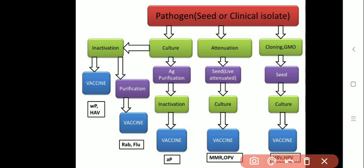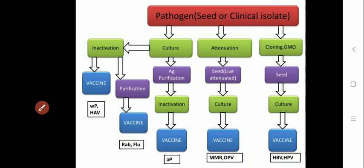Nowadays, genetically modified techniques or gene transfer techniques are used for vaccine production. Such GMOs or cloning techniques can be used as seed culture for the production of vaccines. Specifically, the hepatitis B virus vaccine and the HPV vaccine can be produced by gene cloning techniques.